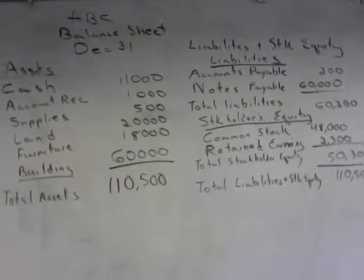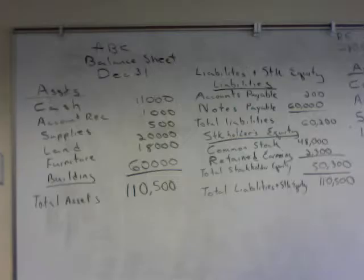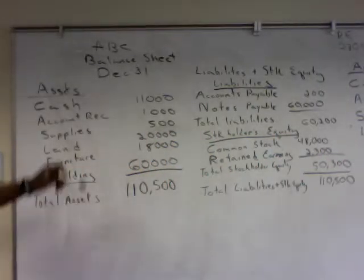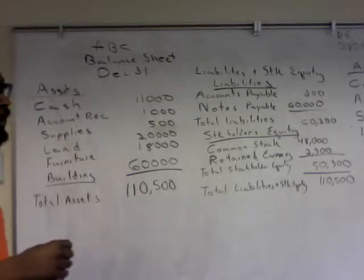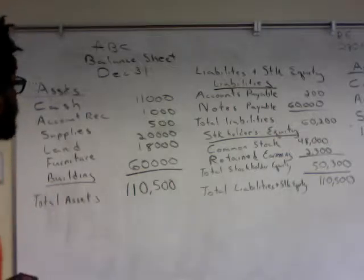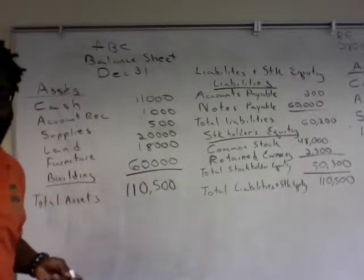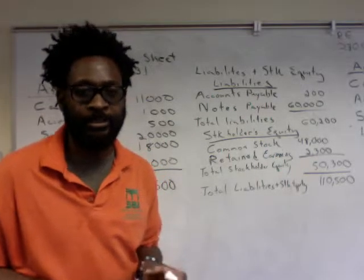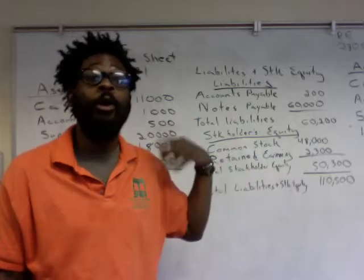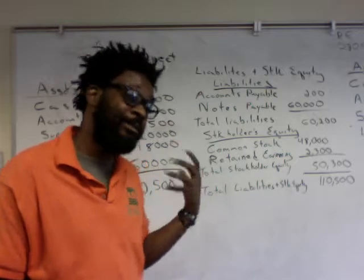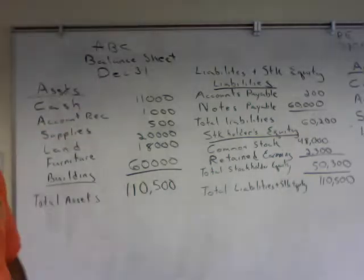This is an example of the balance sheet. The first thing I want to point out is how we properly titled it. There's a difference in how we titled this balance sheet from the other preceding financial statements — the difference comes in with the date. Normally, for statements that represent a period, we'd say 'for the month,' 'for the year,' or 'for the quarter.' But since this is a point in time, we summarize it by the actual date this balance sheet was created.